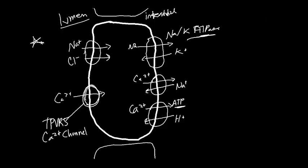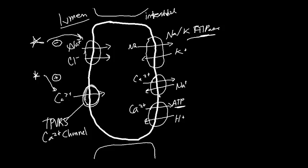So why cover all this normal physiology? Because thiazide diuretics act at two locations here. First, they inhibit the sodium-chloride symporter — if we can't bring sodium into the cell, water can't follow, so sodium and water stay in the lumen and get excreted. Second, they increase the activity of the TRPV5 calcium channel, allowing more calcium reabsorption, and they also increase the calcium pump on the interstitial side.